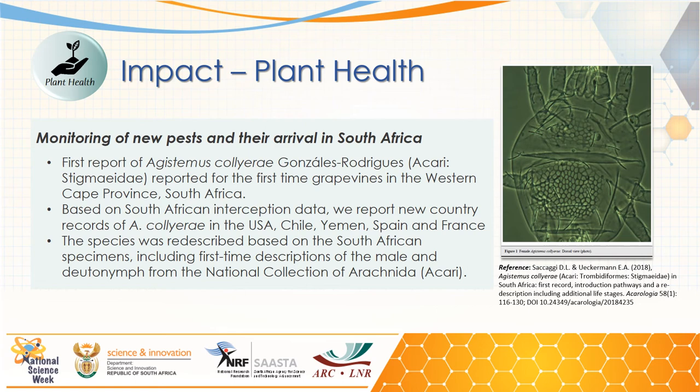The national assets are used to monitor and record the arrival of new pests and diseases in South Africa. In one first report, a grapevine mite was recorded from the Western Cape that has been found on other continents. It was reported to the Department of Agriculture, Land Reform and Rural Development. In this report, the pathway of the mite into South Africa was discussed, and additional life cycles and life stages of the mite were reported.